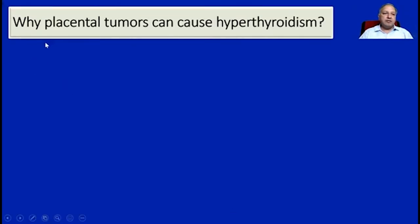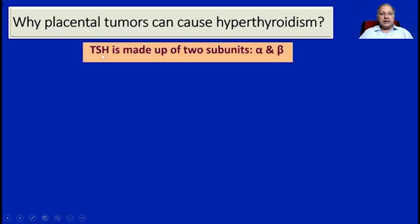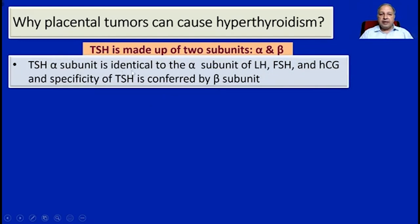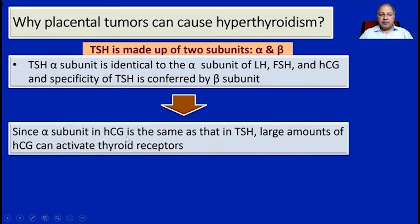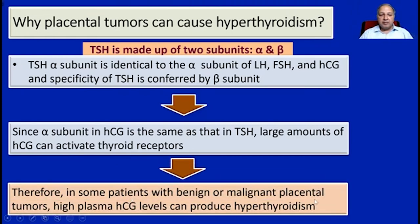An important applied aspect: why can placental tumors give rise to hyperthyroidism? TSH is a glycoprotein made up of two subunits, alpha and beta. The TSH alpha subunit is identical to the alpha subunit of LH, FSH, and human chorionic gonadotropin HCG, while specificity of TSH is conferred mainly by the beta subunit. Since the alpha subunit of HCG is the same as that in TSH, large amounts of HCG released in tumors can activate thyroid receptors. Therefore, in some patients with benign or malignant placental tumors, high plasma HCG levels can produce hyperthyroidism.